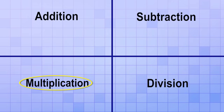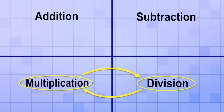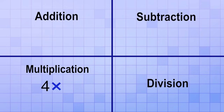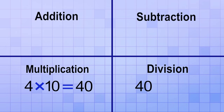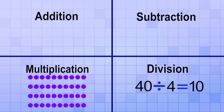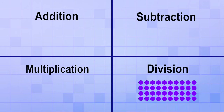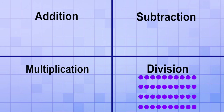Likewise, multiplication and division are inverse operations. If you multiply 4 times 10, that means to combine 4 groups of 10 for a total of 40. But then you could undo that by dividing — you could take that 40 and then divide it back into 4 separate groups of 10. So multiplying groups things, but dividing ungroups them.